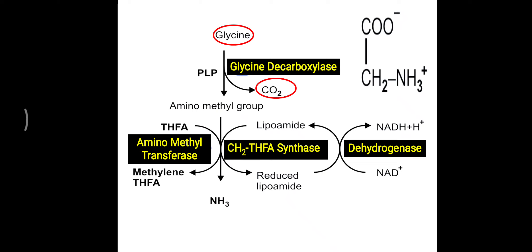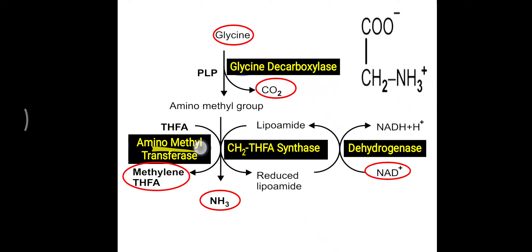The exact reversal of the cleavage system is the glycine synthase reaction. For glycine synthesis via this route, carbon dioxide, ammonia, and methylene-THFA are required, along with folic acid (B9), NAD⁺ (B3), PLP (B6), and lipoamide. Using CO₂, NH₃, and a methylene group, together with these coenzymes, a glycine molecule is formed. This summarizes how glycine is synthesized and broken down.